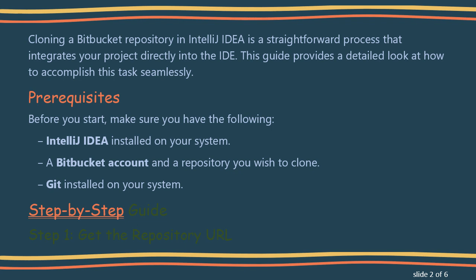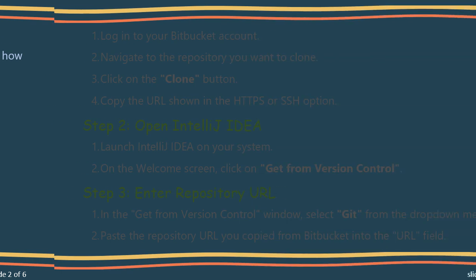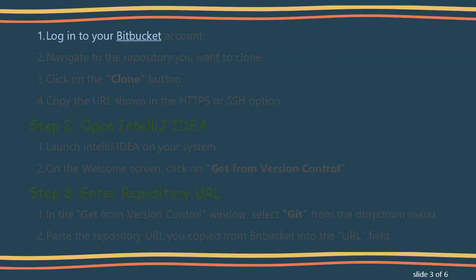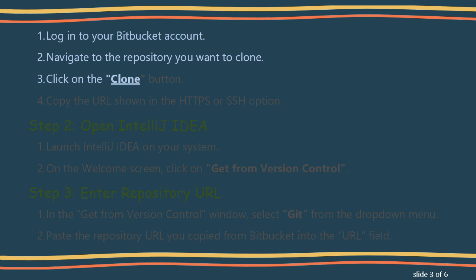Step-by-step guide. Step 1: Get the repository URL. Log into your Bitbucket account and navigate to the repository you want to clone. Click on the Clone button.